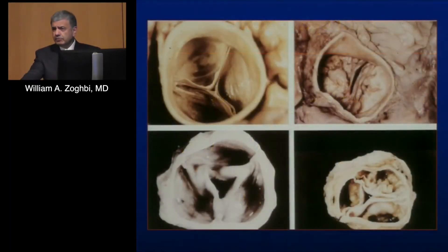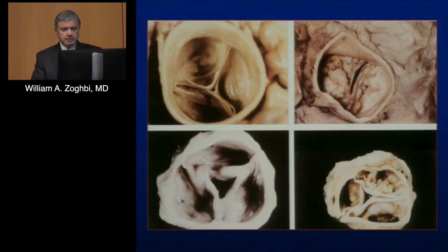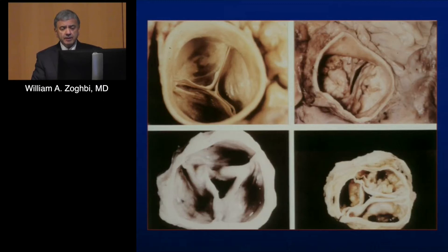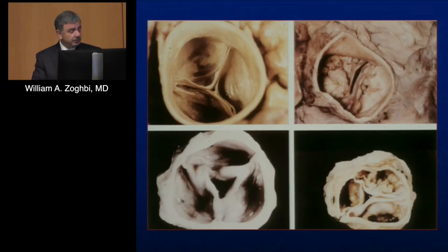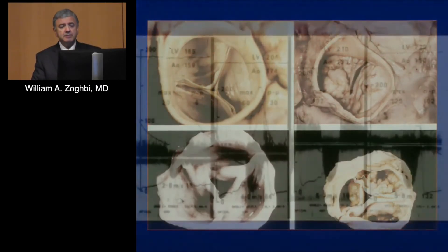Aortic stenosis comes in different flavors and etiologies — from bicuspid to rheumatic, which is much less common in this country but quite prevalent in others. Calcific aortic stenosis shows nodular calcification in the cusps themselves.